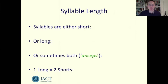Syllables in Greek poetry are either short or long. Two short syllables last the same length as a long syllable, and when we scan a line of poetry we show visually which syllables are short and which are long. Short syllables are denoted like this and long syllables like this, and a few syllables can be both short and long. These are called anceps and we denote them with a cross.